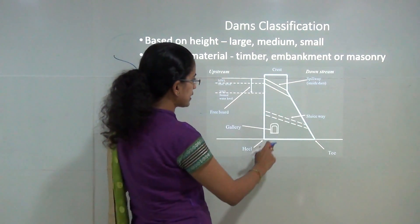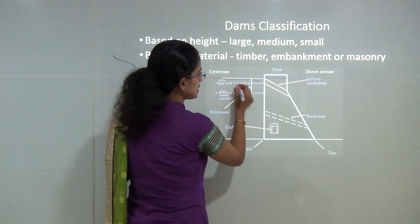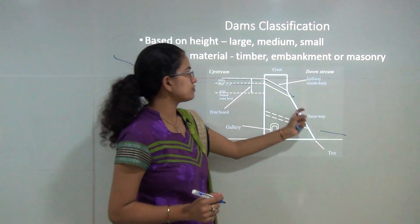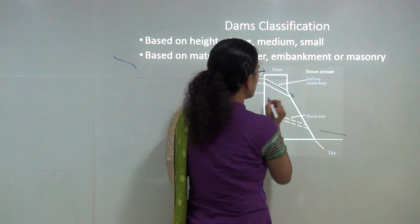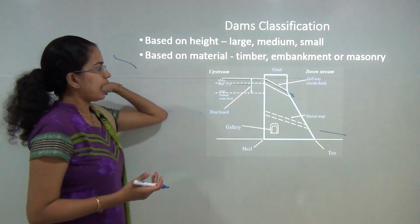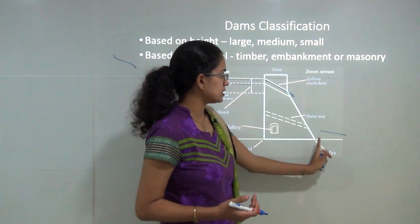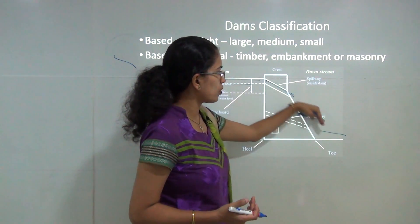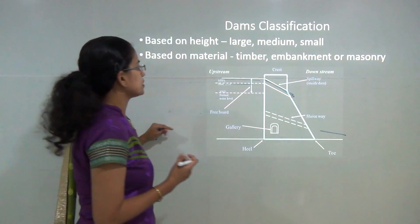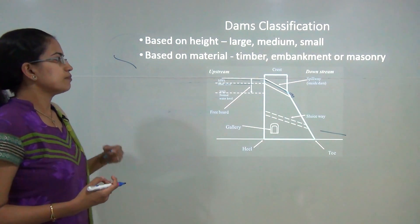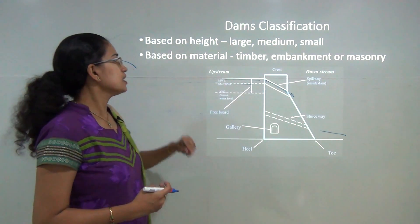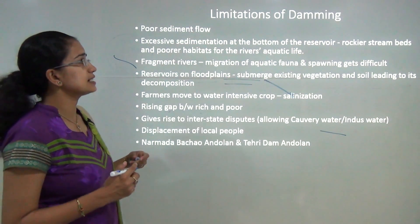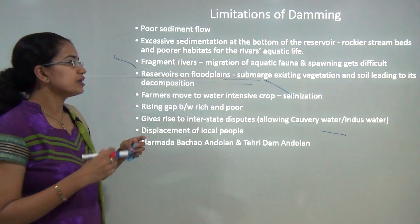Here you can see a diagram showing a dam with the upstream and downstream areas. There is a significant change in gradient, and as water moves down, hydroelectric energy is generated. This initial upper part is called the head and the lower part is called the toe. The spillway within the dam allows water to pass to the downstream level. Dams can be classified based on height — large, medium, or small — or based on material: timber, embankment, or masonry dams.